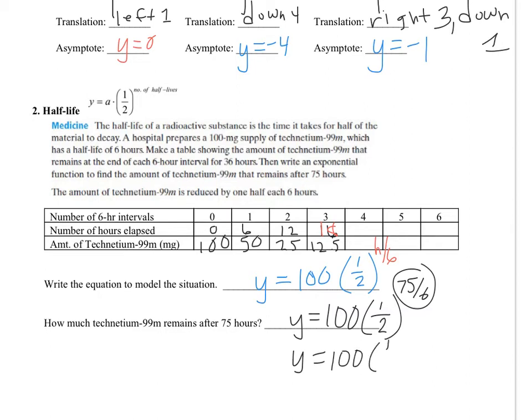So it's going to half 12.5 times in 75 hours. So now I'll just do order of operations, 0.5 to the 12.5. So make sure you do this part first, and then multiply by 100. And I'm going to have to round because the decimal is a long decimal. So it's approximately equal to 0.017 milligrams.